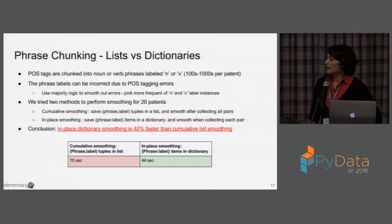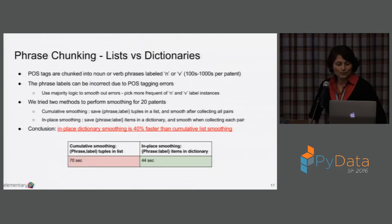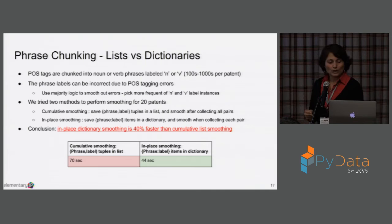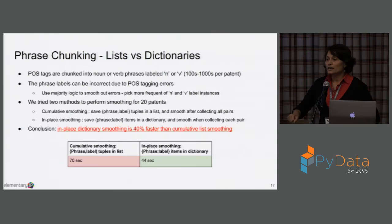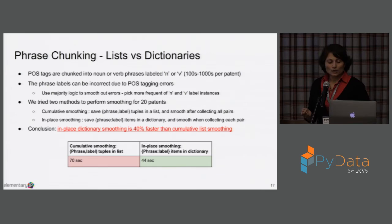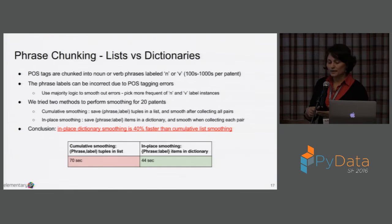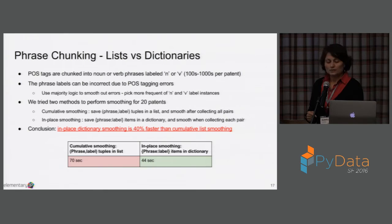The next phase is phrase chunking — we want to mark noun or verb phrases because noun phrases tend to be more informative. There are typically hundreds to thousands of these phrases we find per patent. The question was how to store them and figure out if we have multiple instances of the same phrase, since sometimes they're inconsistent due to errors in the underlying tagging. We used majority logic to reconcile the different labels. We tried two methods: cumulative smoothing using a list, then going back to reconcile with smoothing; or in-place dictionary smoothing where you smooth right as you grab a new phrase. Obviously the dictionary smoothing is faster — like a hash table — and it's 40% faster than using a list.